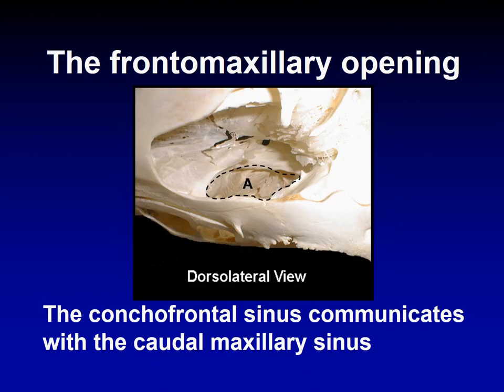The caudal part of the dorsal concha communicates with the frontal sinus — that's why it's called concha-frontal. The ventral concha communicates with the maxillary sinus. Now, the concha-frontal and the maxillary communicate together through the frontal-maxillary opening, which is a large opening denoted as A in this picture.